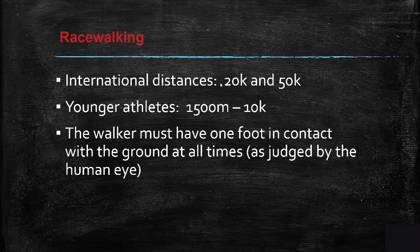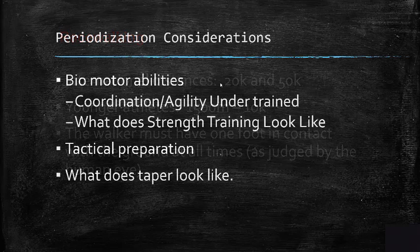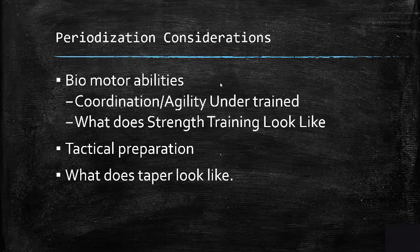For race walking, international distances are 20K and 50K; younger athletes go from 1,500 meters up to 10K. The walker must have one foot in contact with the ground at all times as judged by the human eye, and too many faults result in disqualification. Regarding periodization, coordination and agility are undertrained components — too many distance coaches are fixated on running volume and intensity and don't spend enough time on coordination and agility, which significantly impacts running mechanics later in the season.